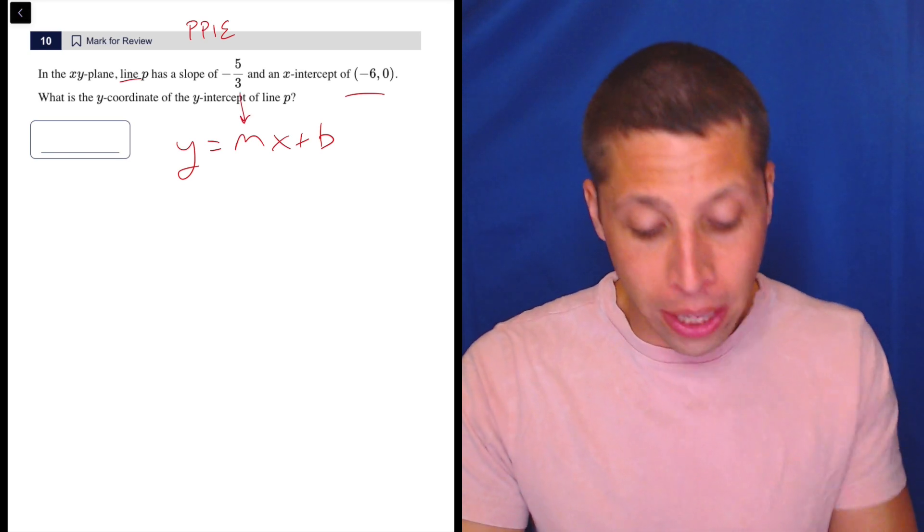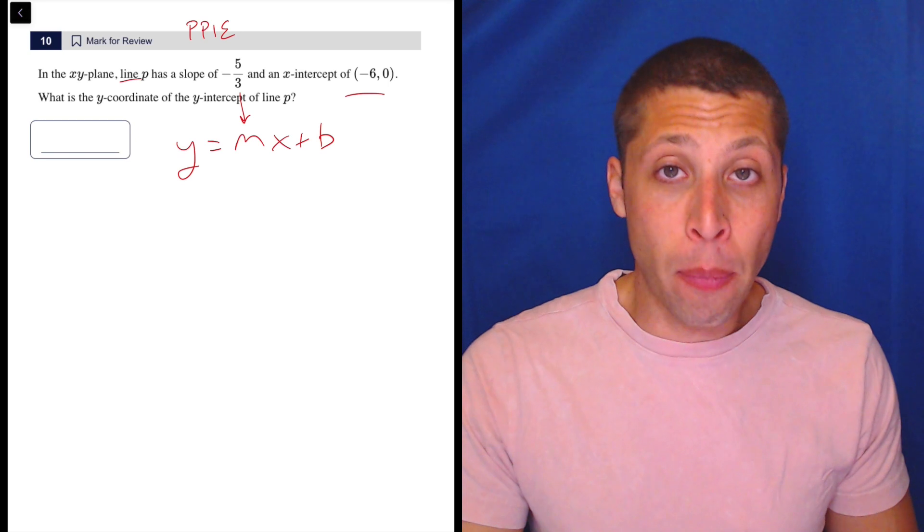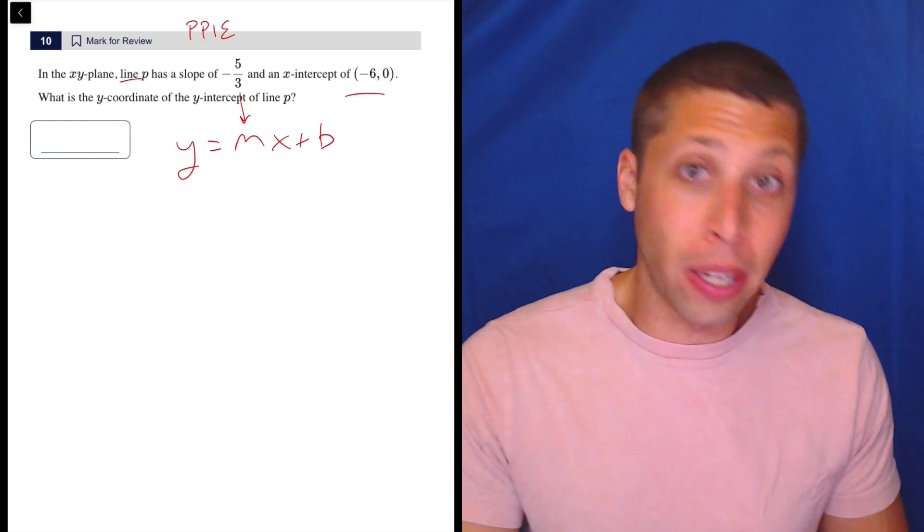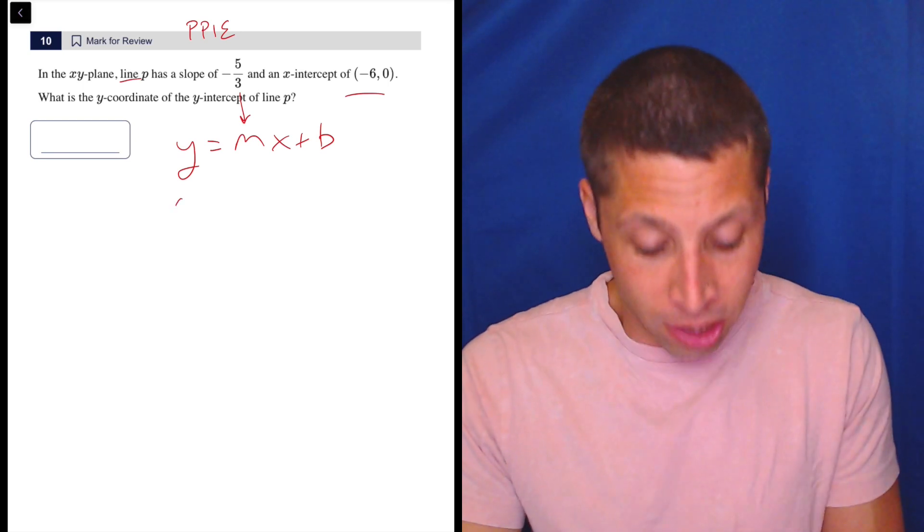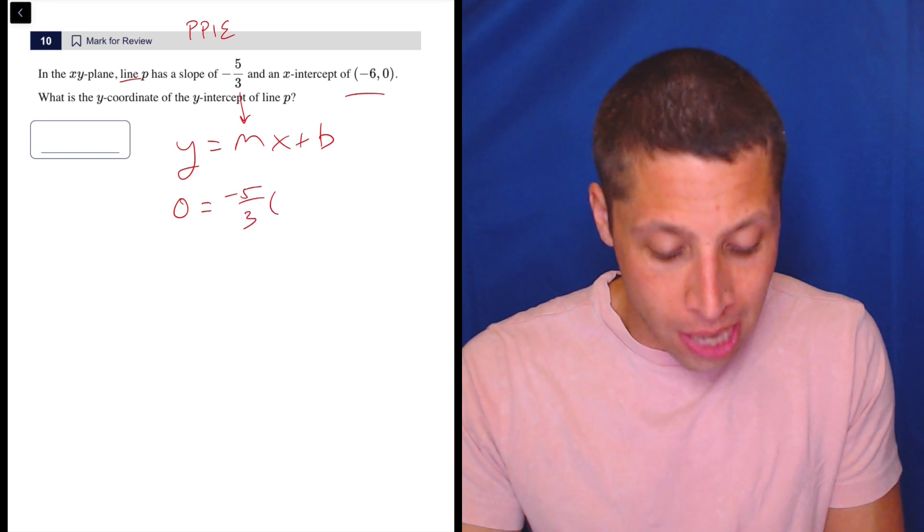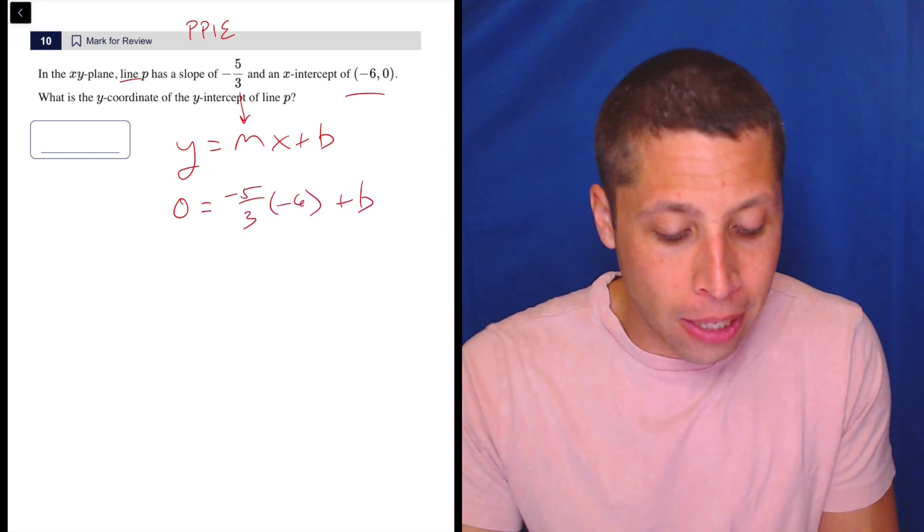Well, we definitely have the slope, right? So we can put that in for m. But remember, anytime we have a point, it doesn't matter what that point is, we can plug it in for the x and the y. So 0 is equal to negative 5 thirds times negative 6 plus b.